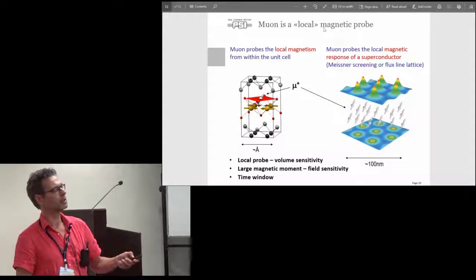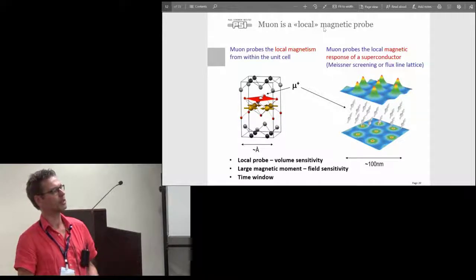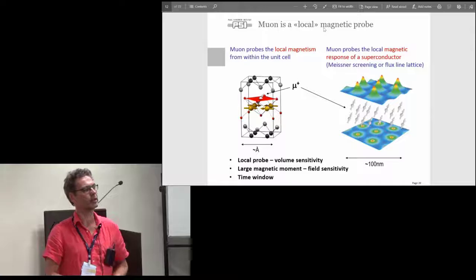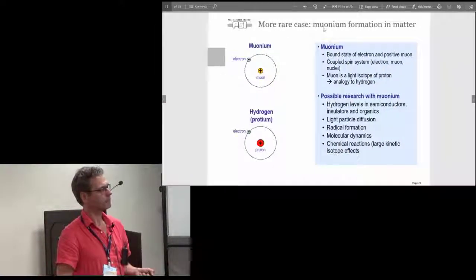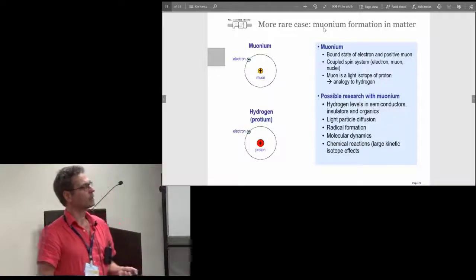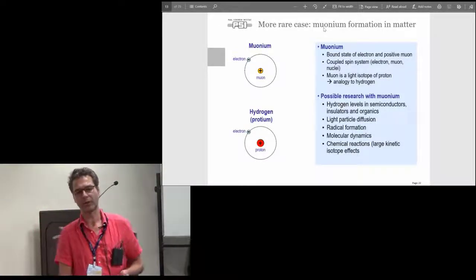In superconductors, typically one measures the field distribution in the vortex state. From this you can get important information about the penetration depth and superconducting order parameters.